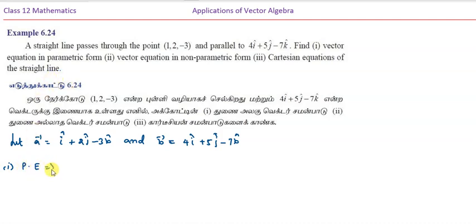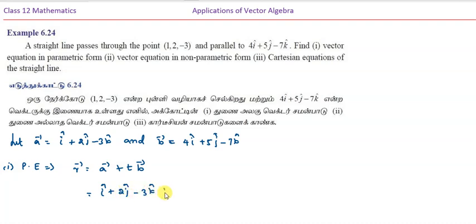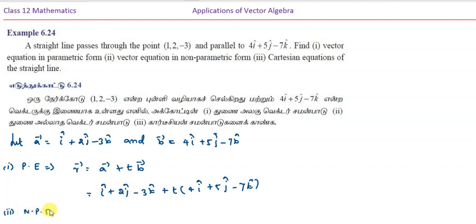The formula for the parametric vector equation is r = a + t·b. Substituting, r = (i + 2j - 3k) + t(4i + 5j - 7k). This is the first part — the vector equation in parametric form.